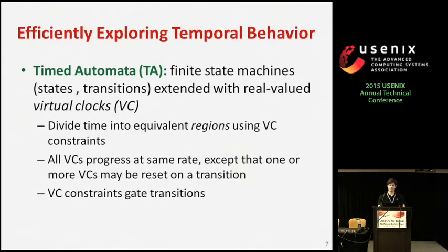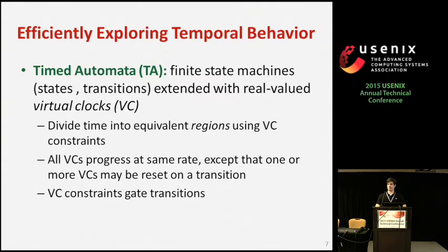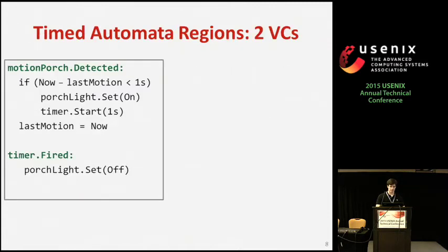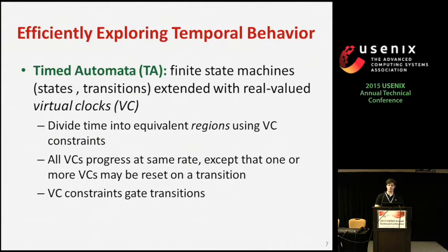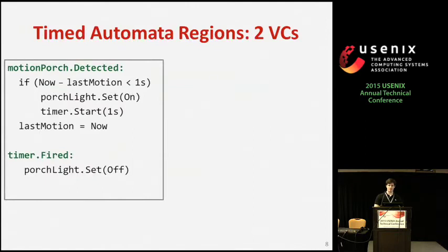Timed automata are state machines extended with a finite number of real-valued clocks. The constraints on these virtual clocks divide time into equivalent regions such that the exact value of time within a region doesn't matter. In a timed automaton, all the clocks run at the same rate and they progress explicitly through a special delay transition — nothing happens in the system except a delay. After a transition, one or more clocks can be reset. Using these clock constraints, we can partition time into a finite number of equivalent regions. All points within a region are equivalent with respect to their successor regions — a delay from any point within a region will progress time to the same region for all those points.